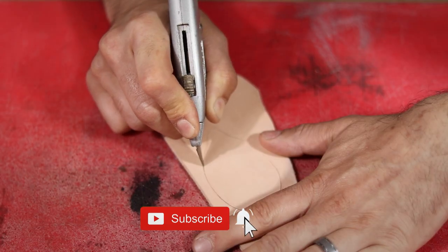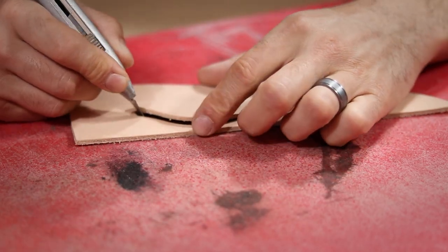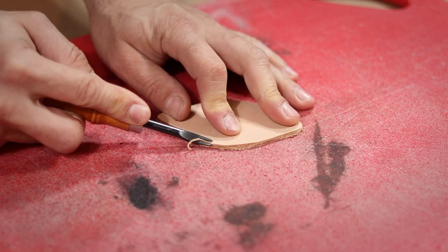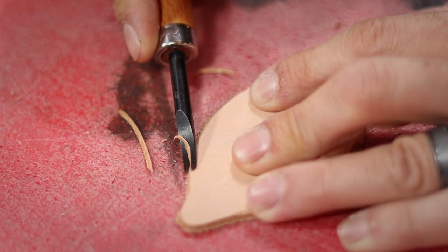With that all set, I carefully cut out the shape with a sharp razor. And using an edge beveler, I knock down any sharp corners on the front and the back of the eye patch.